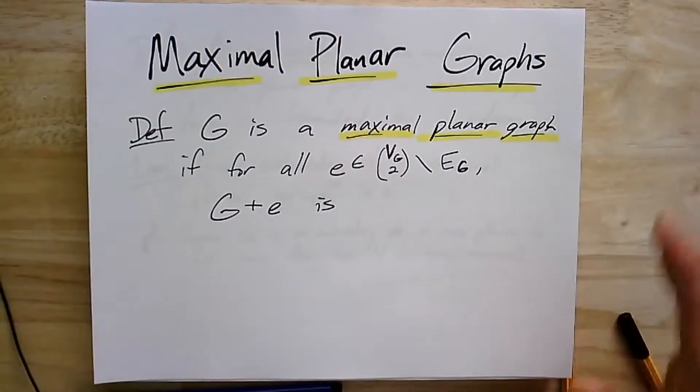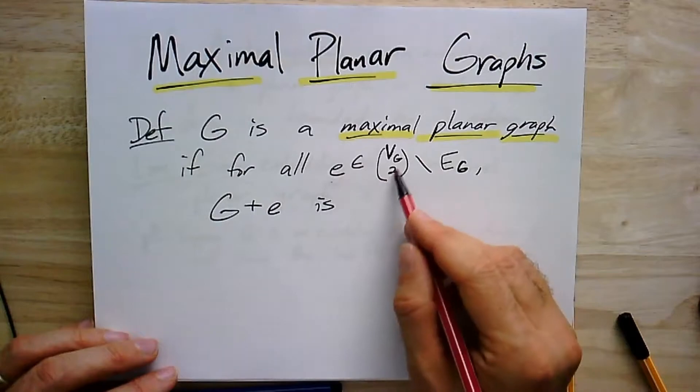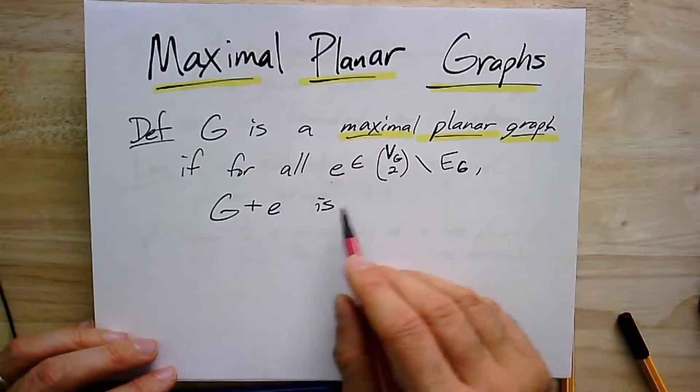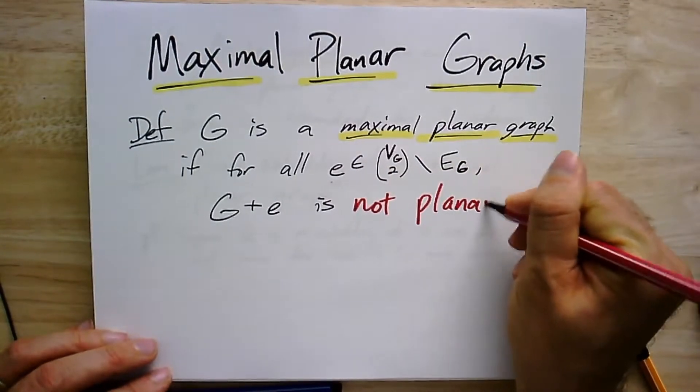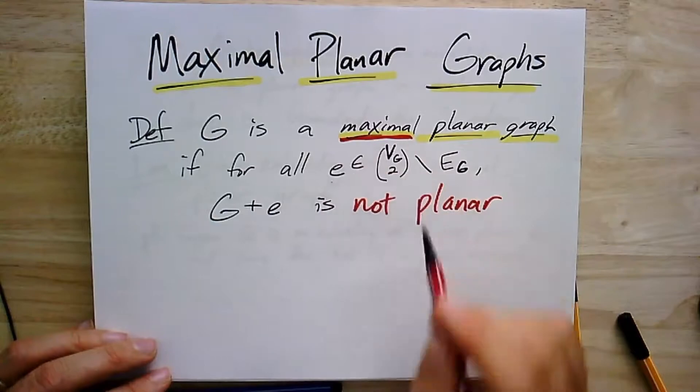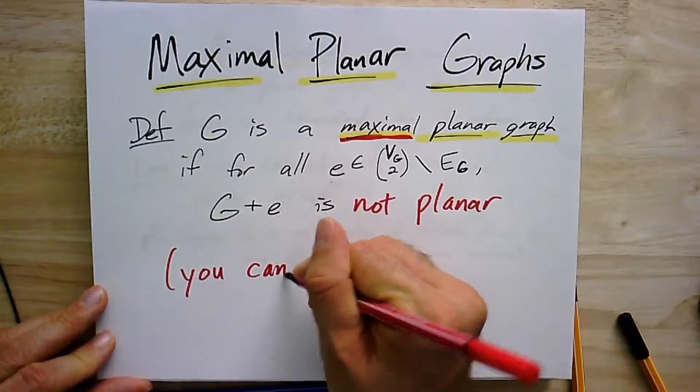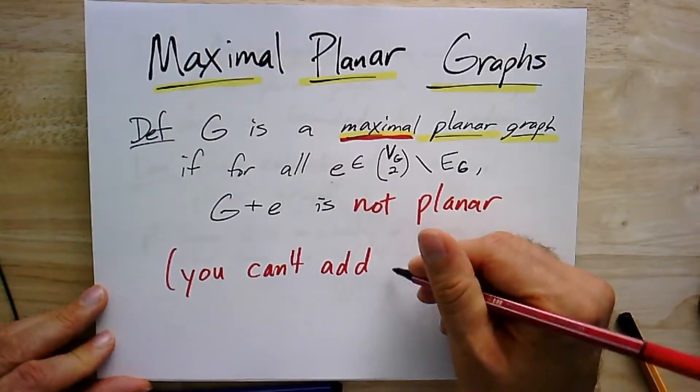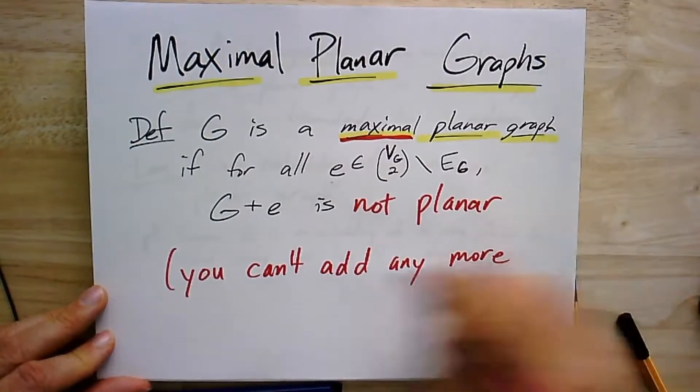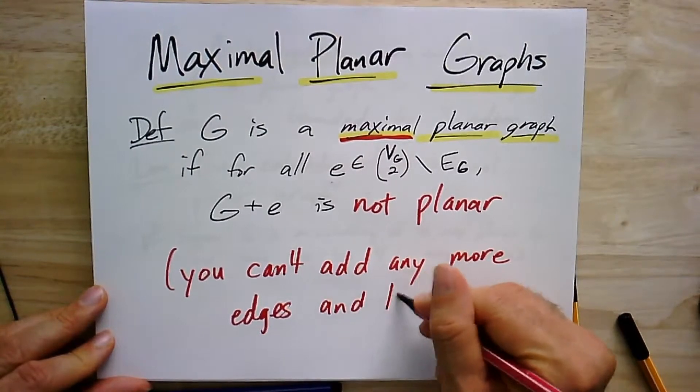A graph is a maximal planar graph if it's planar, and if I add any edge—so this is a weird way of writing—there's some pair of vertices that's not already an edge, and if I add that to the graph, then this is going to be not planar. So I'm really defining what it means for the planar graph to be maximal, can't add any more edges. If you try to add any more edges, it will not be planar anymore. So we can't add any edges, I guess I'll just put and keep it planar.